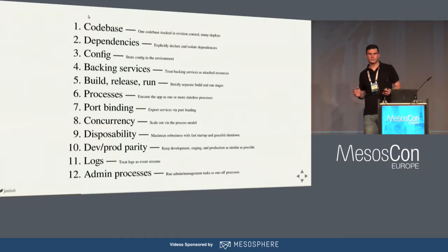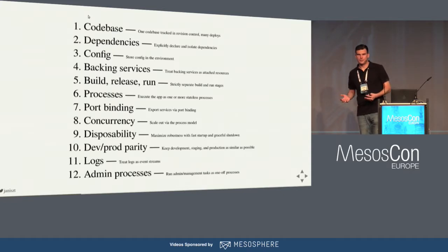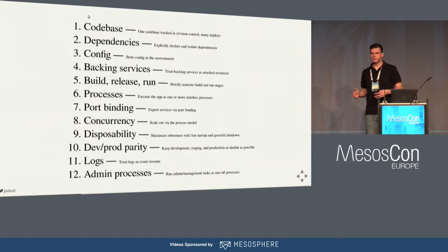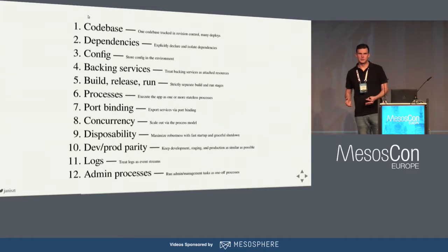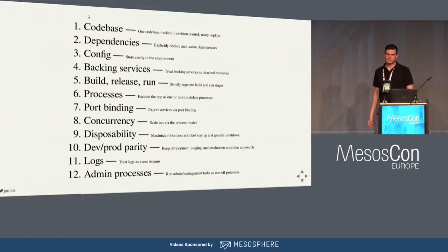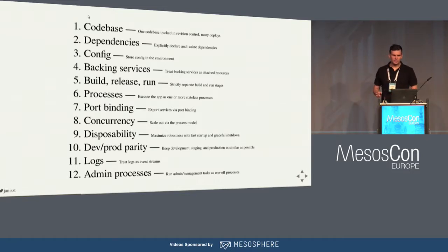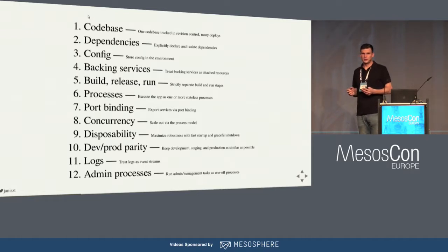Let's walk through the 12 factors. Codebase: the application should be built from one single repository — the executor won't help us here. Dependencies: applications should have all dependencies embedded in the application, not relying on the system. If your application depends on Java, Java should be inside the package; if it needs Tomcat or Nginx, those should be included — everything in a single package runnable with a single command, or in a container if you can't statically link. Configuration: configuration should be stored in environment variables — and this is where the executor can help us.